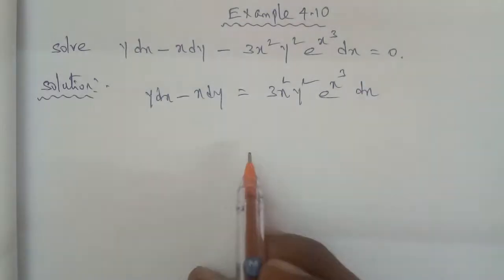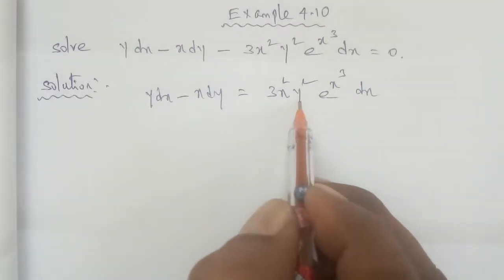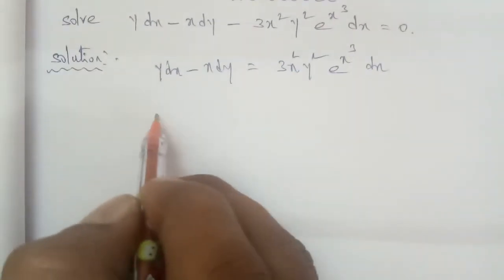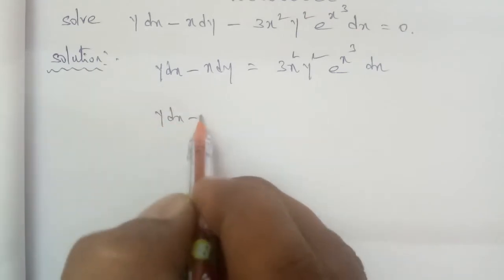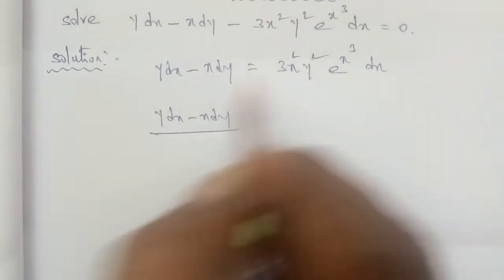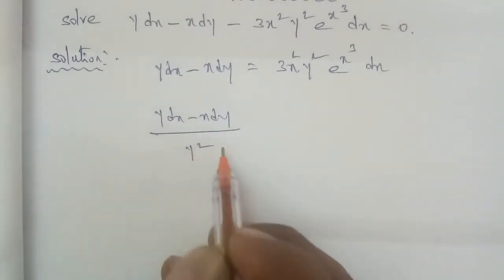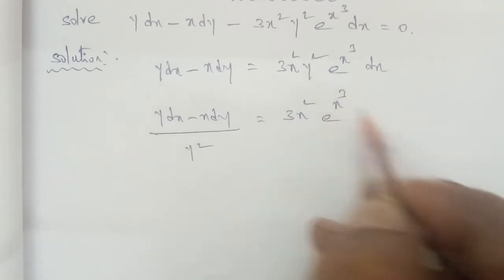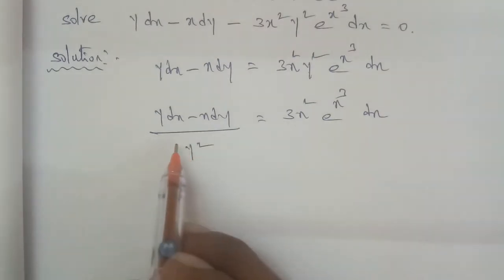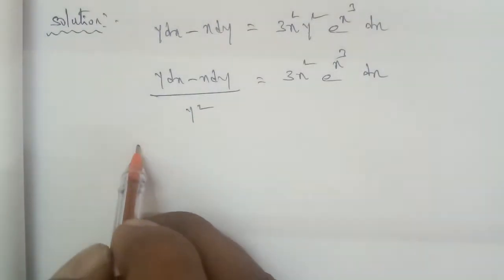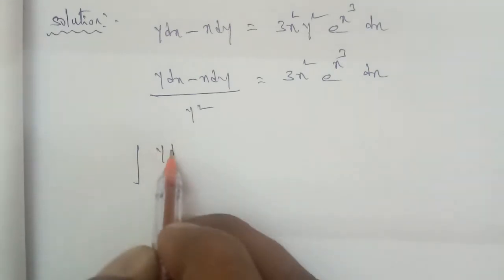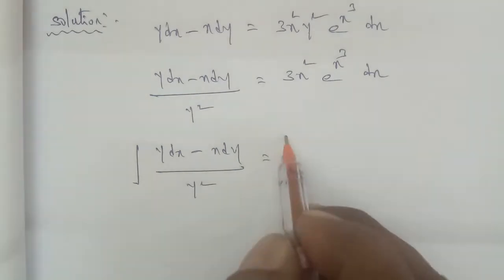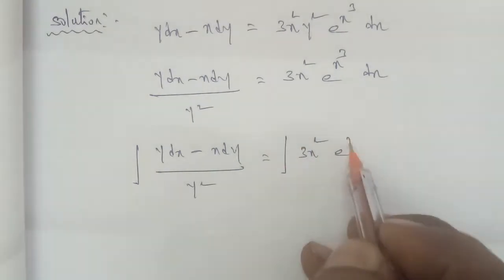Now divide through by y squared. So we get y dx minus x dy divided by y squared, on the left side, equal to the integral of 3x squared e to the power x cubed dx on the right side. We set up the integration on both sides.